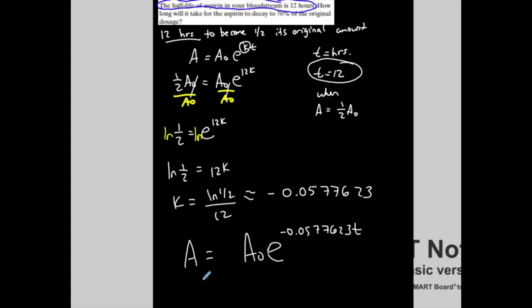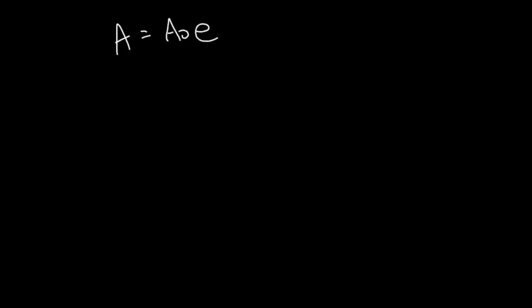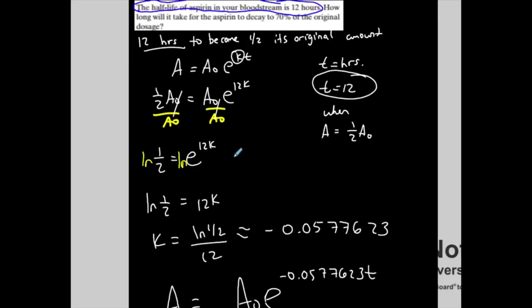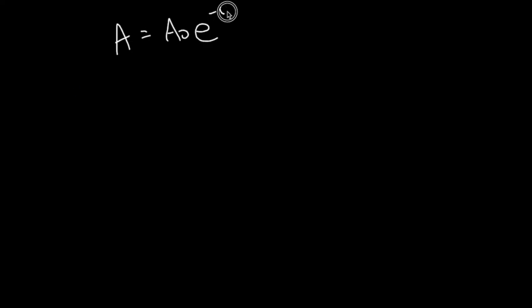So our general exponential decay function for aspirin is A = A₀ · e^(−0.0577623t). Notice k is negative, confirming exponential decay. We can now use this function to find other scenarios — either using this decimal approximation or the exact form ln(1/2)/12.